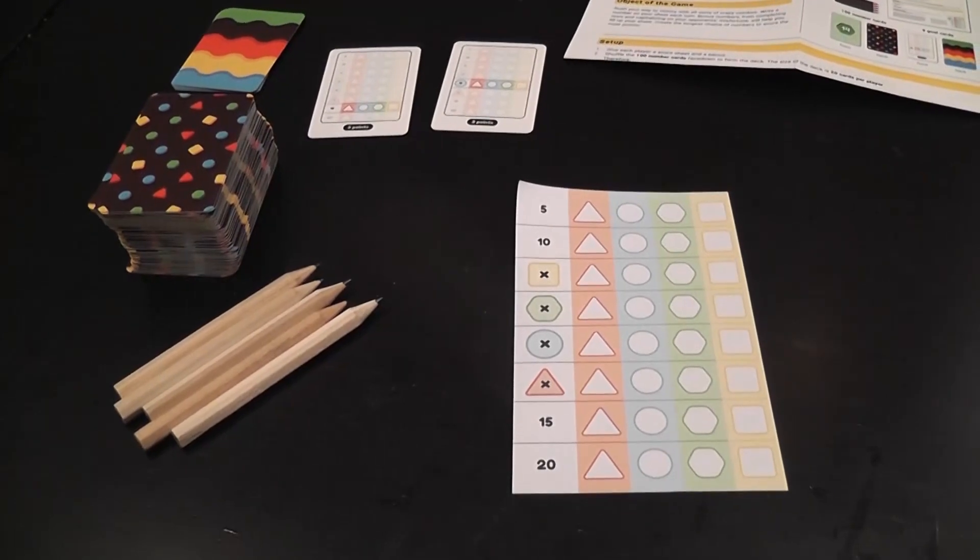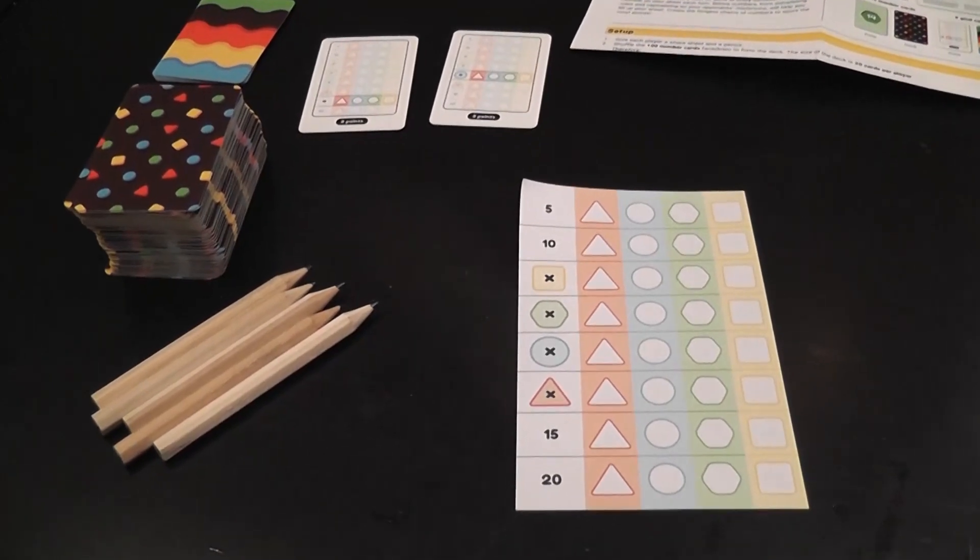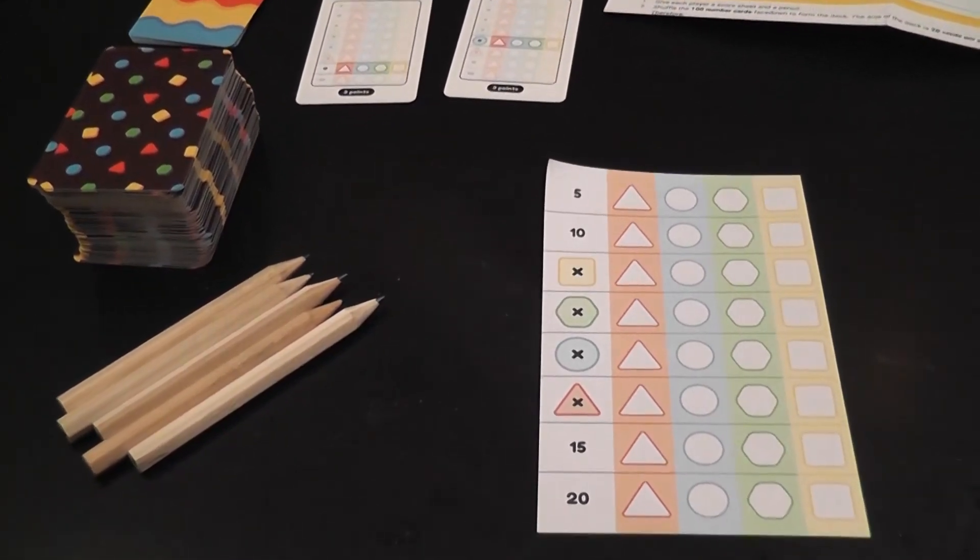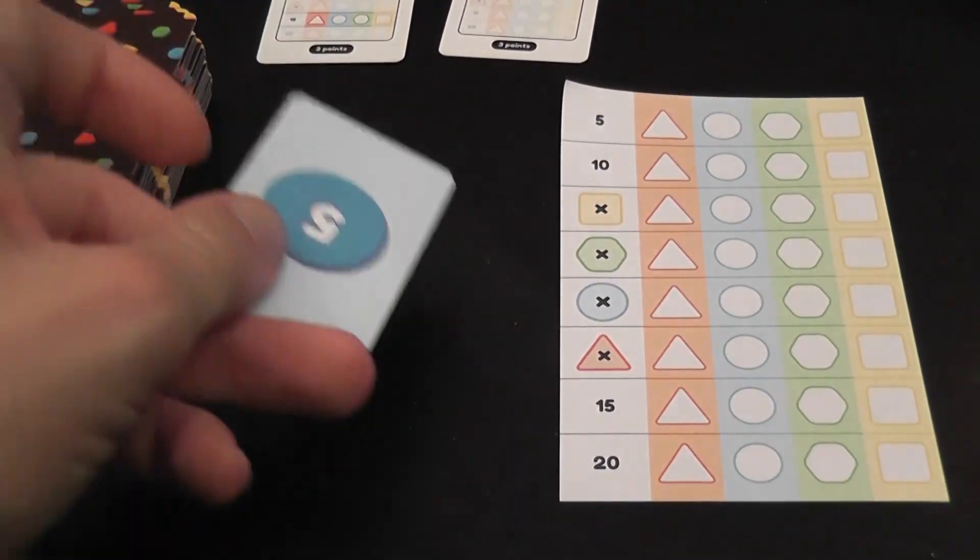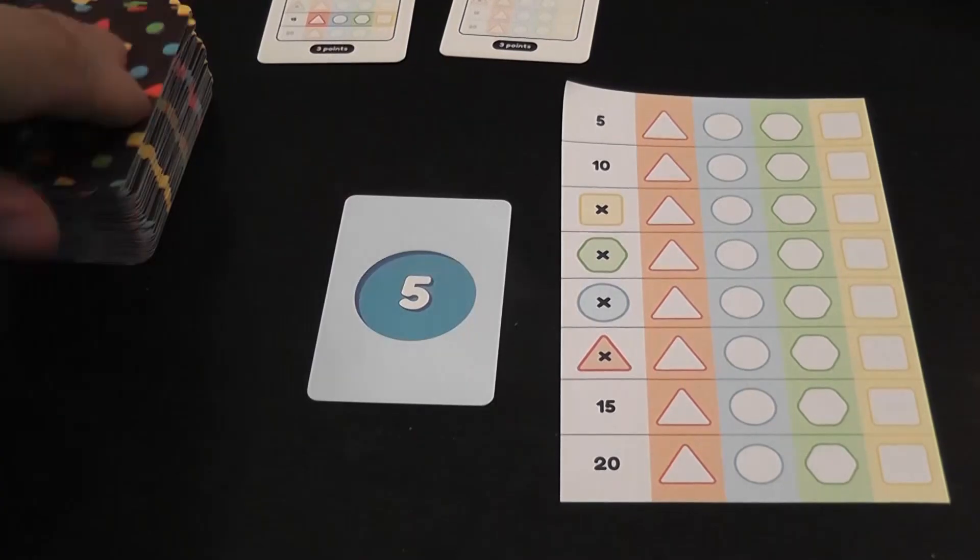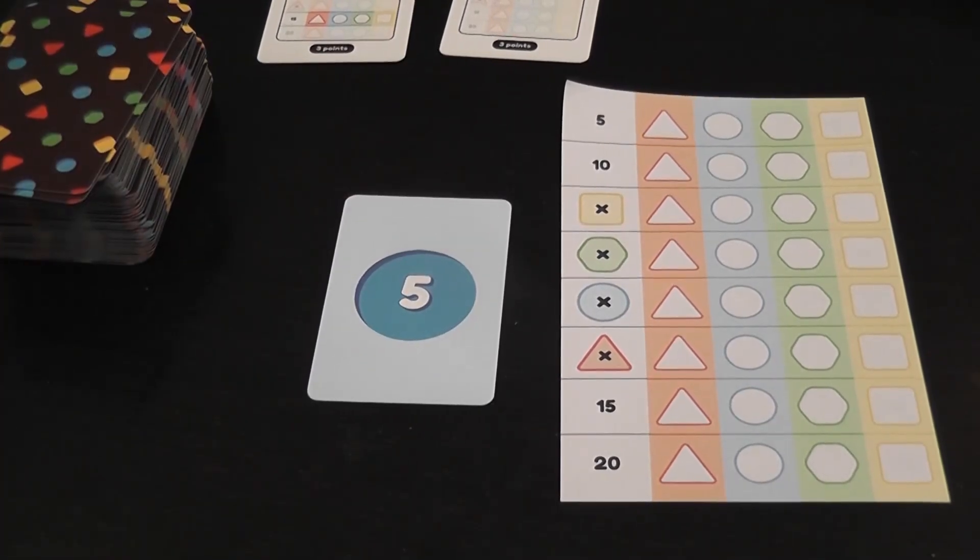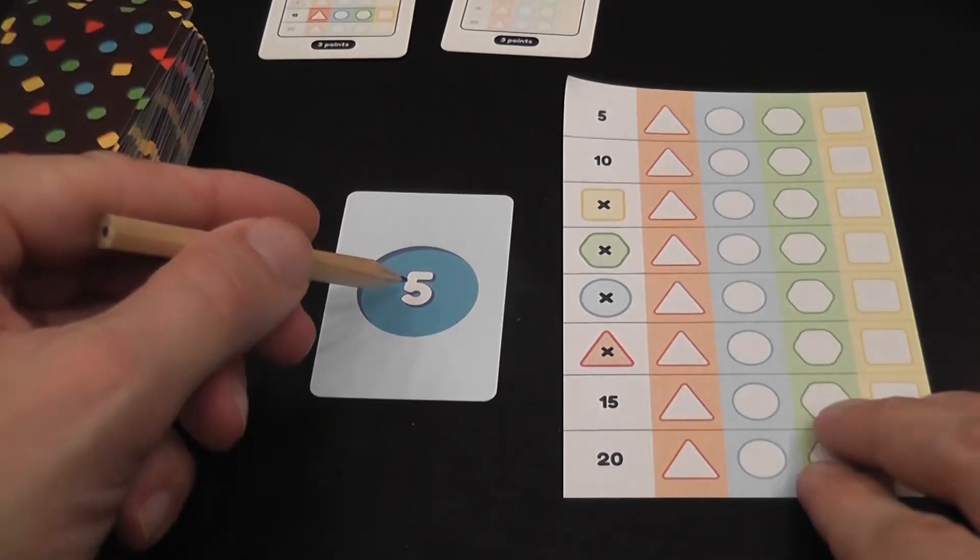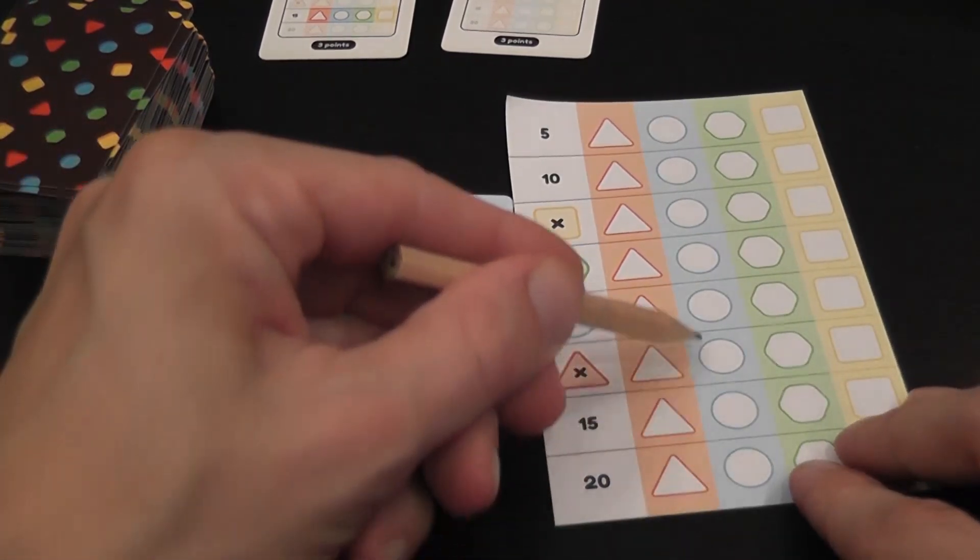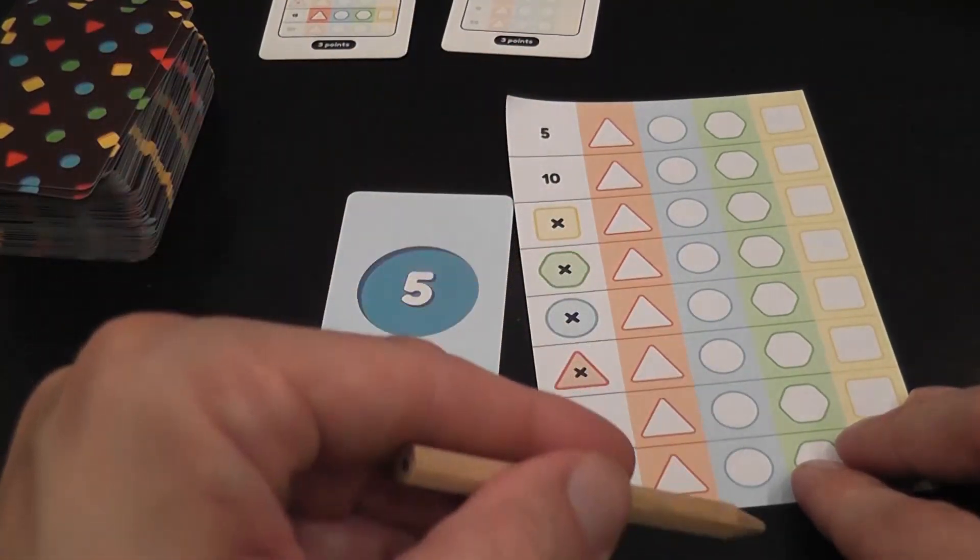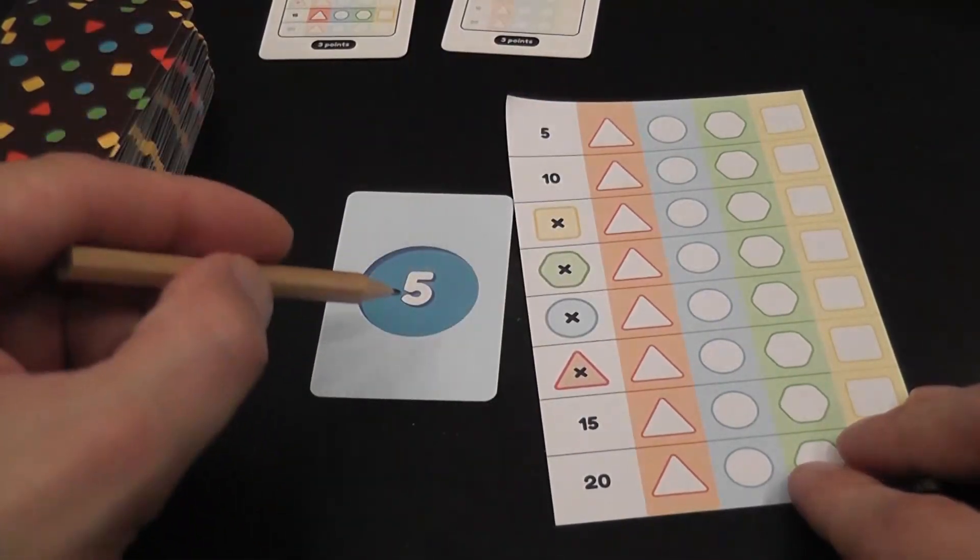Very simple gameplay. Each turn, and gameplay is simultaneous, all players play at the same time. Each turn, each player receives a card. Suppose one receives this one, and another player receives that one. Then what you do is, you write it down. You write that number anywhere in the column of that color or shape.